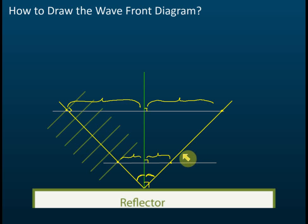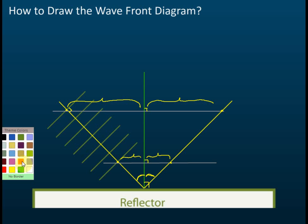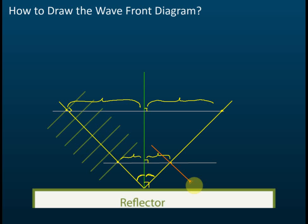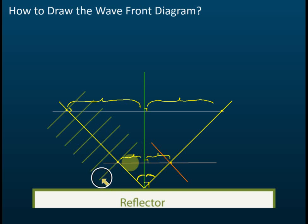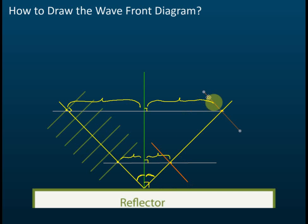Now you can start drawing your wavefronts — I'll use orange color here. Make sure the line passes through the midpoint. Draw the first one and the last one first, then count the wavefronts in between — for example, one, two, three, four, five — and draw those additional wavefronts.